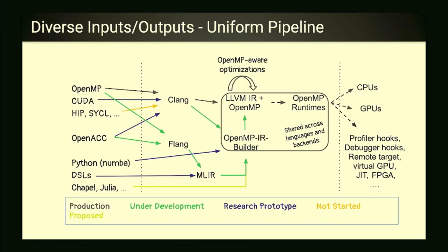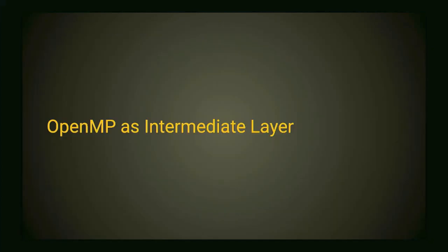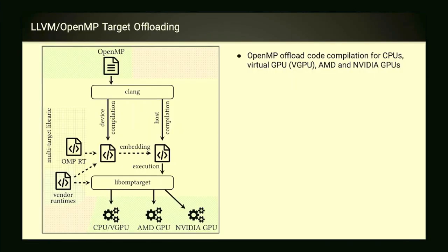One of those blue arrows I'm going to talk about is the CUDA to OpenMP path — you start with CUDA and lower it onto the OpenMP runtime. Then you can target the virtual GPU on the host (run CUDA code on your CPU) or target an AMD GPU with your CUDA code — because maybe you have a lot of AMD GPUs and don't want to throw away your CUDA code. We basically treat OpenMP as an intermediate layer.